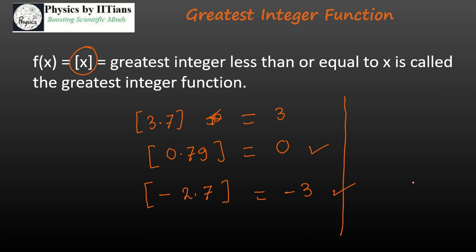These are the greatest integer values when you have a fractional number. But if you have a perfectly integer number, the greatest integer value of that integer, let's suppose 3, will be 3 itself. That means if you put an integer inside the greatest integer symbol, it will give you that integer. But if you put a fractional number, it will give you an integer number that is less than that fractional number.